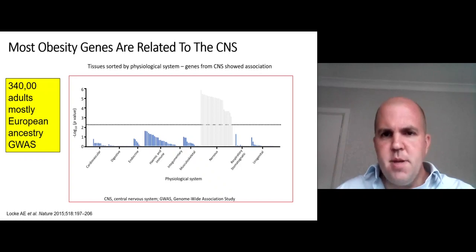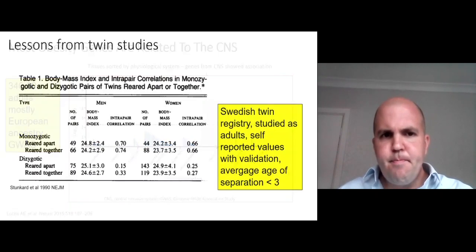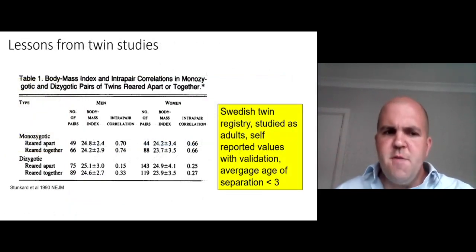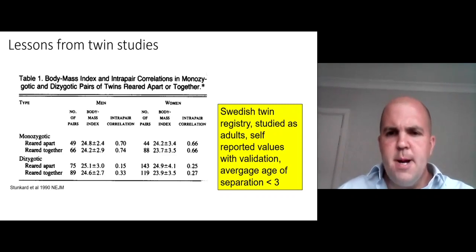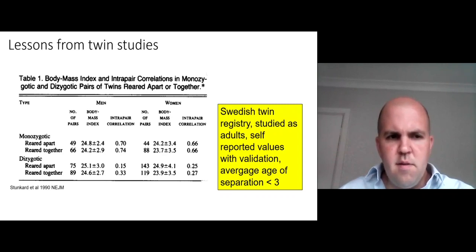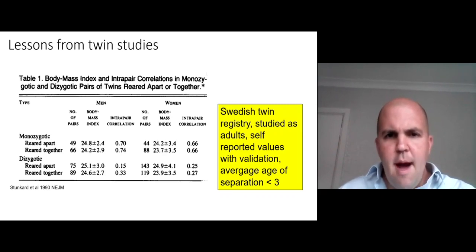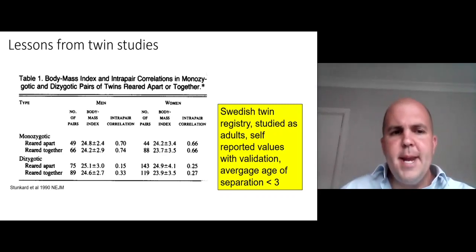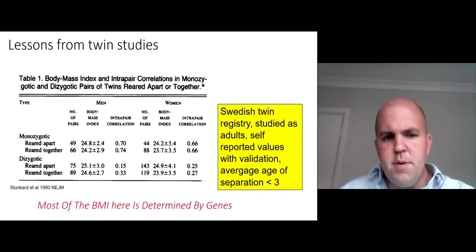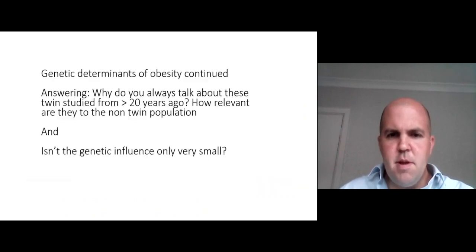Many talks focus on twin studies, and here is one from the Swedish twin registry where twins were studied as adults — both identical (monozygotic) and non-identical (dizygotic) twins, either raised separately (separated before age three) or raised together. The BMI of adults was compared, and the study found that similarity was far greater in identical twins, irrespective of whether they grew up together or apart, showing a clear genetic determinant of body mass index.